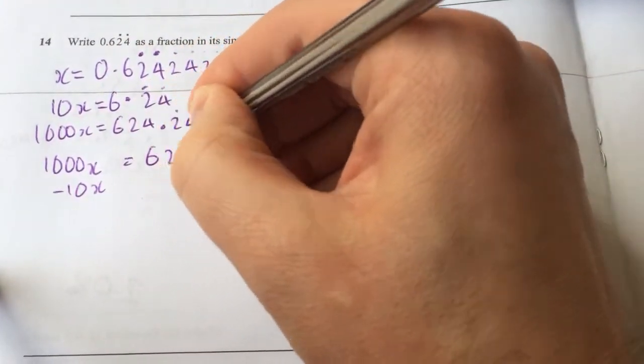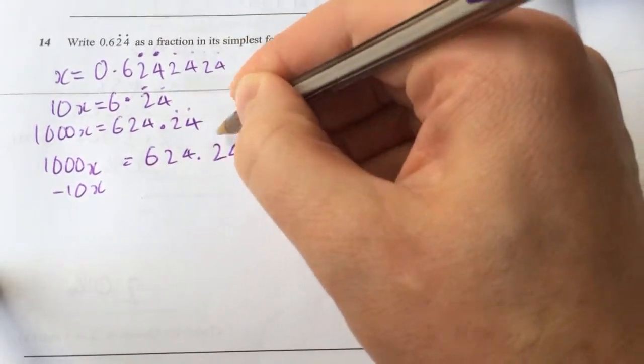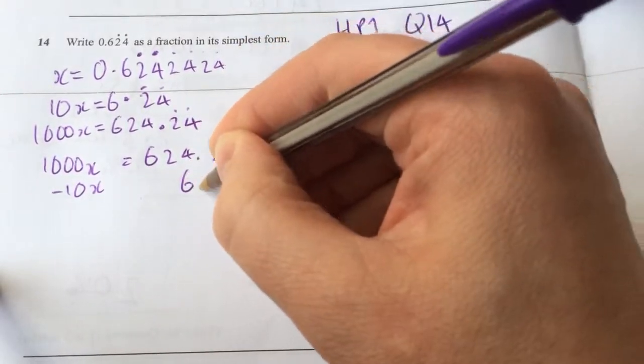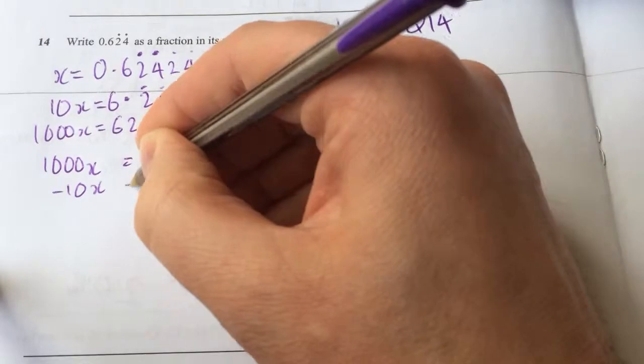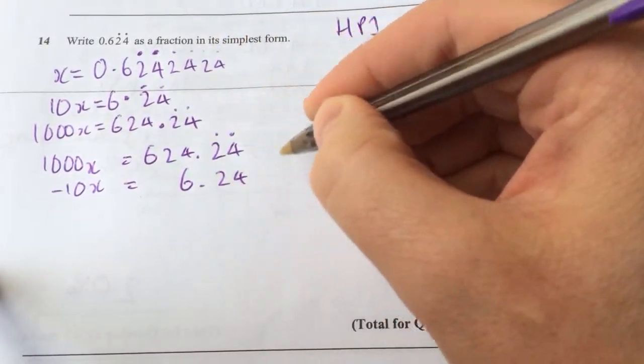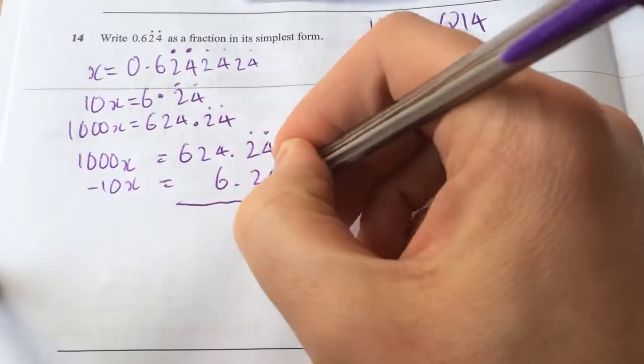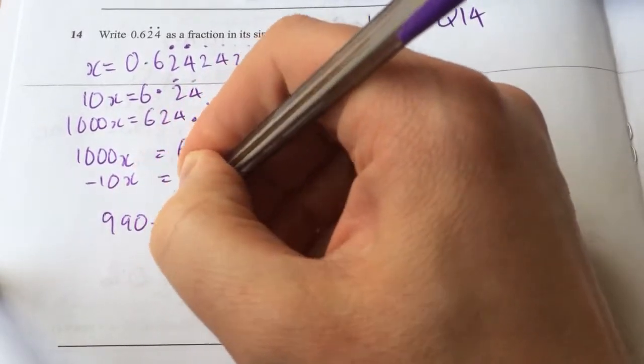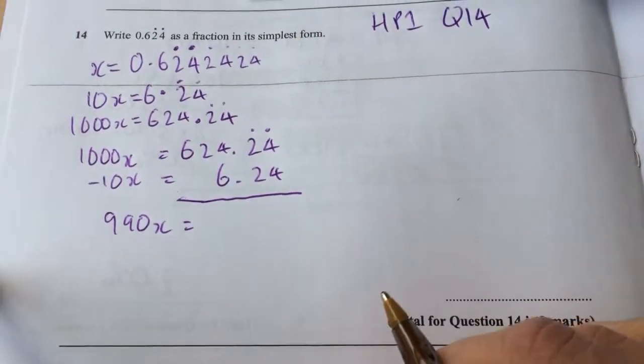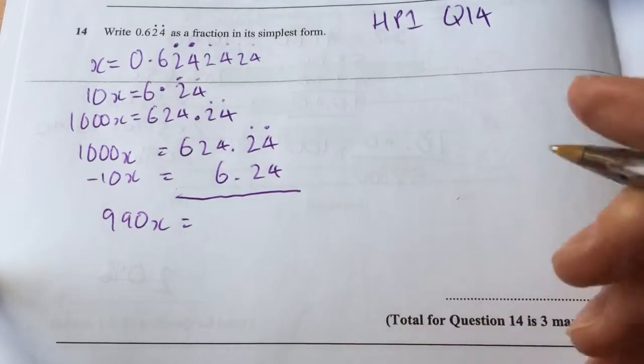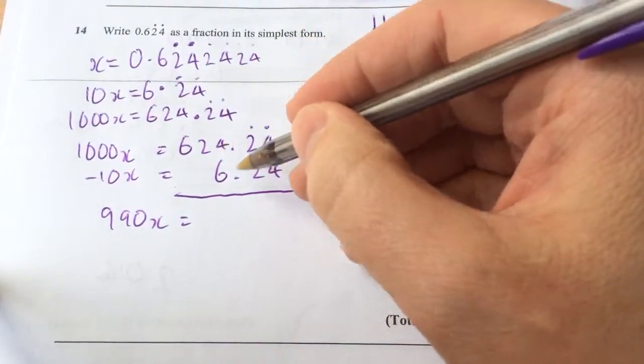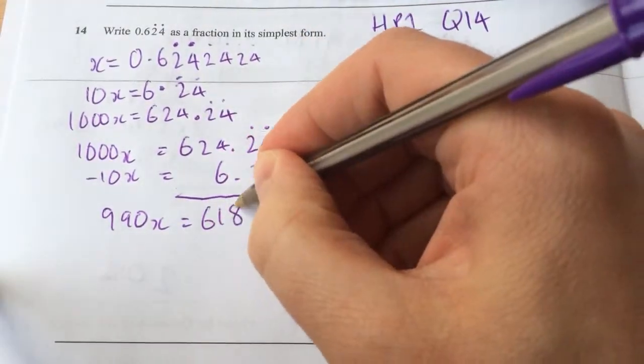And if I write it a little bit more in line, you'll see that as I subtract all those ones will fall away. So now I'll have 990x equal to 624 minus 6, 618.